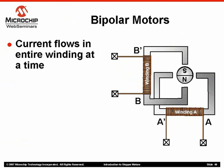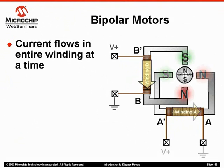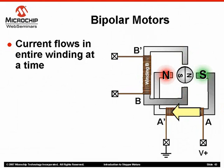On the other hand, bipolar motors allow current flow in both directions through each winding. Applying a voltage to lead A' and grounding lead A generates current flow, resulting in the stator polarity shown above. Removing the voltage from winding A and applying a positive voltage to lead B' on winding B while driving lead B to ground generates current flow and stator polarities as shown above. This continues to rotate the rotor 360 degrees.